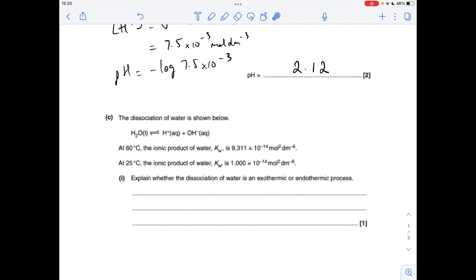First part of C, we've got to explain whether the dissociation of water is exothermic or endothermic. So if we look at the Kw value, at the higher temperature of 60 degrees C, Kw is higher, so that means that the dissociation of water is promoted by a higher temperature, so therefore the dissociation must be an endothermic reaction. Remember, an increase in temperature favours the endothermic reaction.